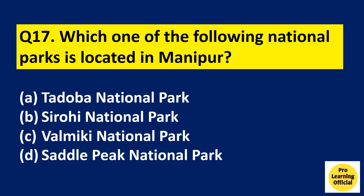Question number 17: Which one of the following national parks is located in Manipur? Option A: Tadoba National Park. Option B: Sirohi National Park. Option C: Valmiki National Park. Option D: Saddle Peak National Park. The right answer is Option B, Sirohi National Park, which is in Manipur. Tadoba National Park is in Maharashtra, Valmiki National Park is in Bihar, and Saddle Peak National Park is in Andaman and Nicobar Island.